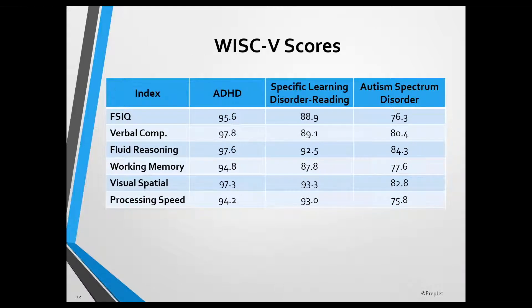For the exam, you want to memorize the highest and lowest primary index scores obtained by children and adolescents with ADHD, Reading Learning Disorder, and Autism Spectrum Disorder. Unfortunately, unlike the groups for the WISC-4, the highest and lowest index scores are not the same for all three of these groups, so you'll have to memorize each group separately.